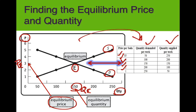It's really important that we understand what this means. Everybody who wants to pay $3 is going to get their soda. We have an equilibrium where people paying $3 get their quantity, and the market supplies 150 of those. That is called equilibrium. Does that make sense?